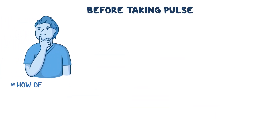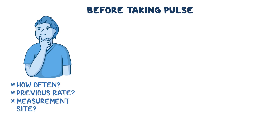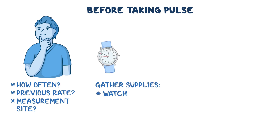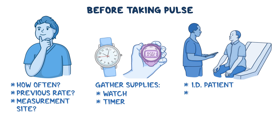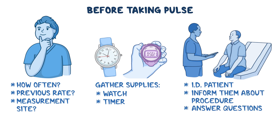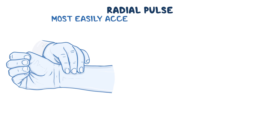Before taking your patient's pulse, consider how often the pulse should be measured, the patient's previous pulse rate, and the measurement site. Gather the supplies you'll need, including a watch with a second hand or a timer. Identify your patient, inform them about the procedure, answer any questions, and practice hand hygiene.